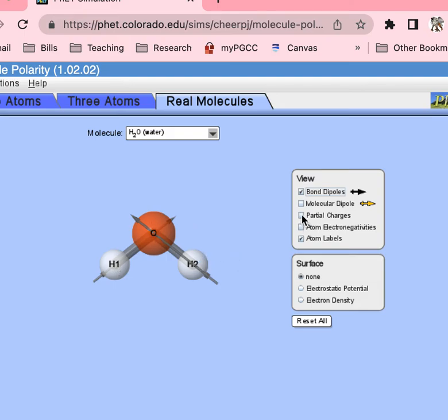And that means that the hydrogen is partially positive and the oxygen is partially negative. Same with this hydrogen over here. We can show partial charges, and you can see that this one actually gives it numbers. So the delta here is 0.38. That's a partial positive charge. Same thing for the other hydrogen. And for the oxygen, it's minus 0.75. So it is partially negative, getting close to full-on negative though.